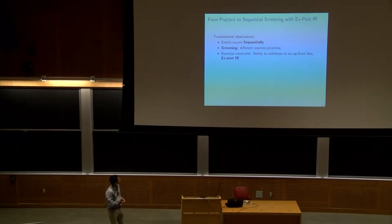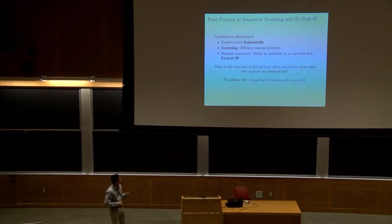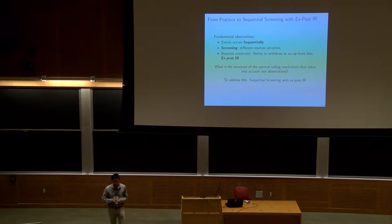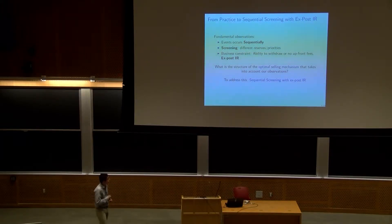Combining these three fundamental observations, a natural question to ask is: what is the structure of the optimal selling mechanism that takes into account these three observations? The most natural framework to address this question is sequential screening with exposed participation constraints.